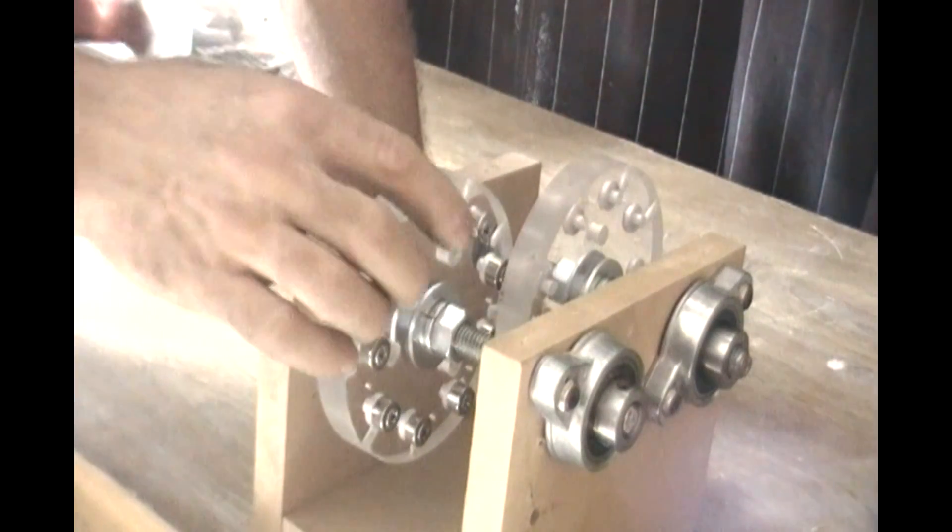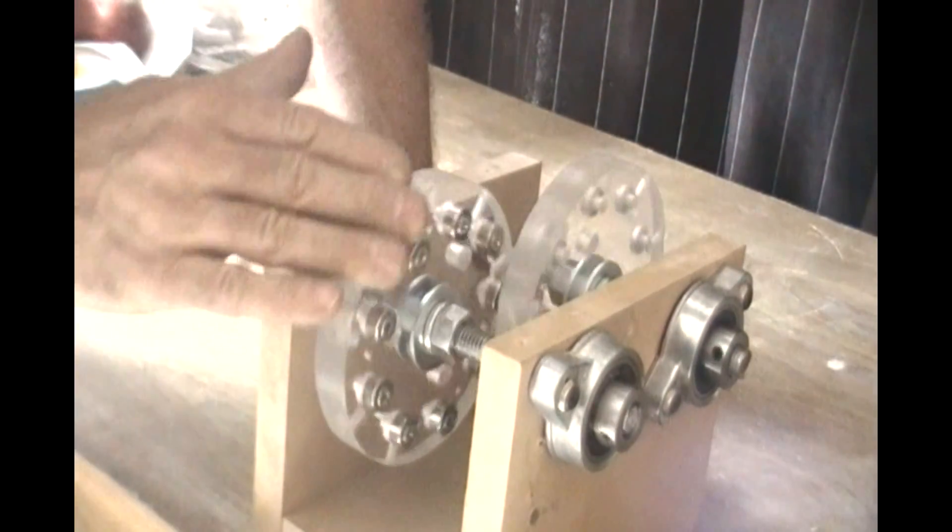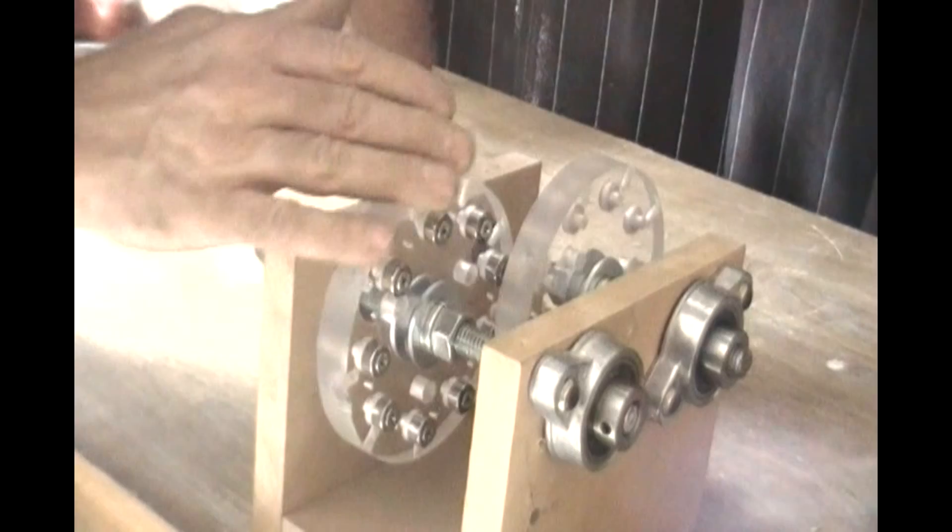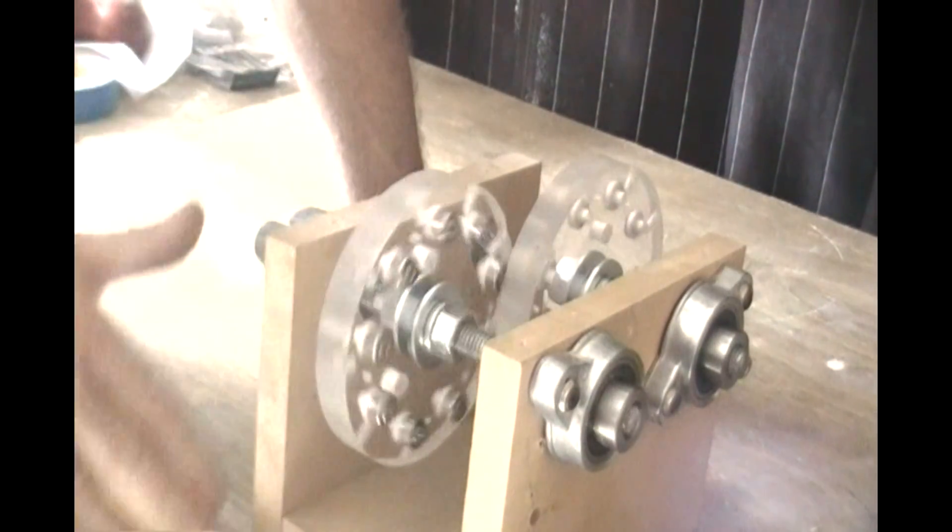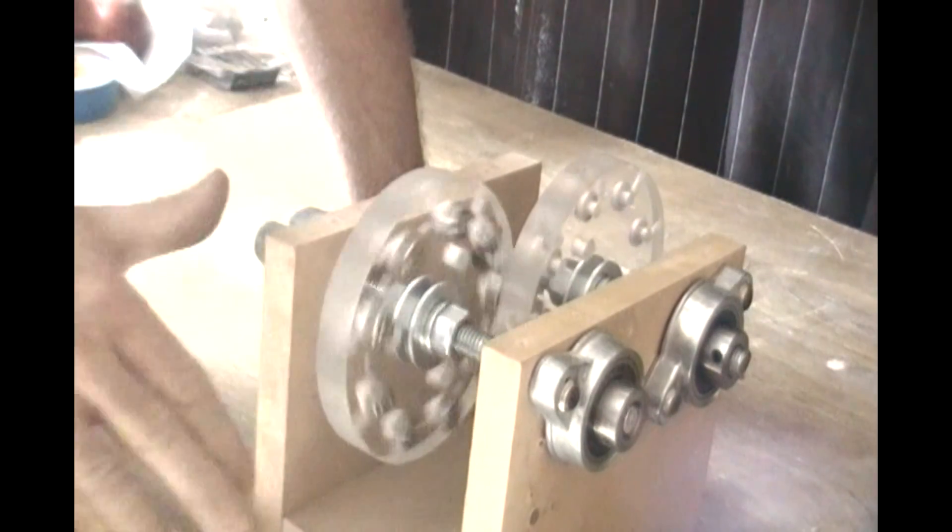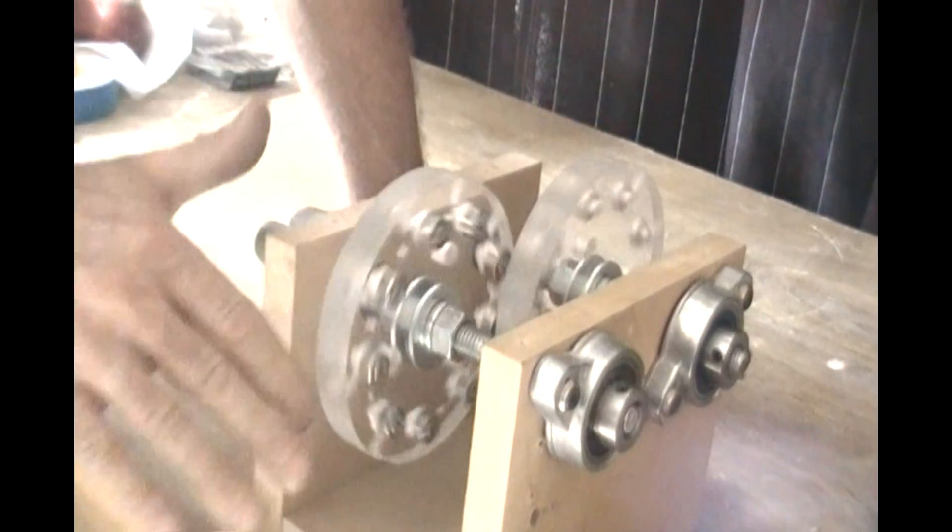So I thought maybe I could get away with these smaller magnets in this configuration since they are overlapping so much here. But they just don't grab well enough. So it looks like I'm going to have to go to the larger magnets after all.